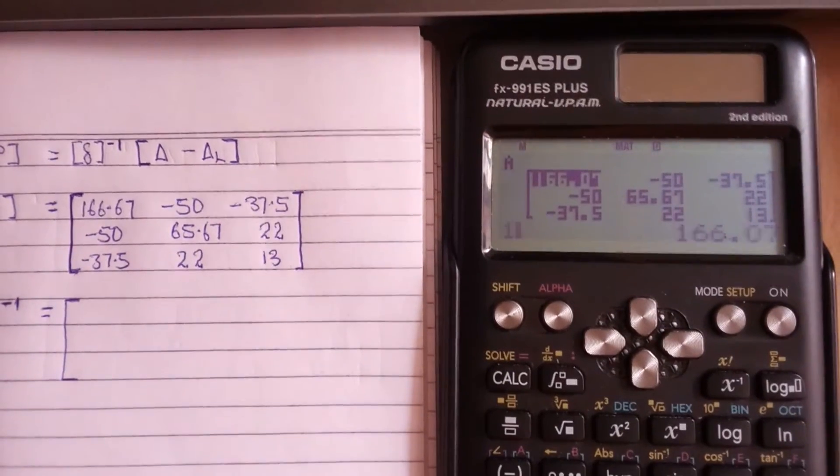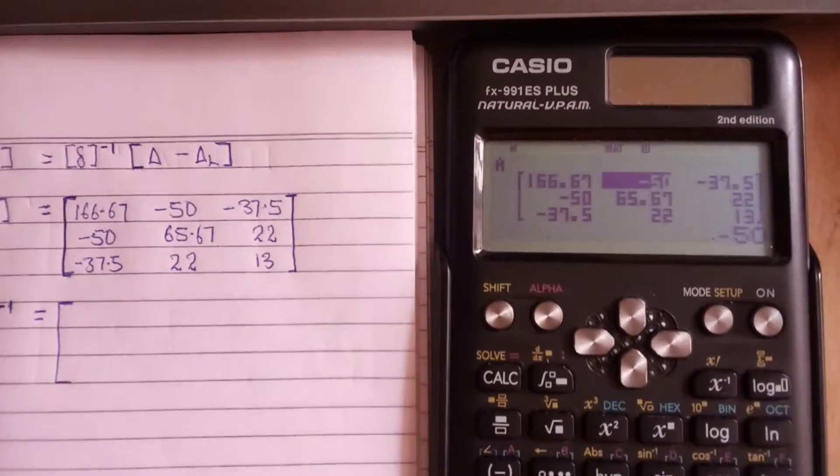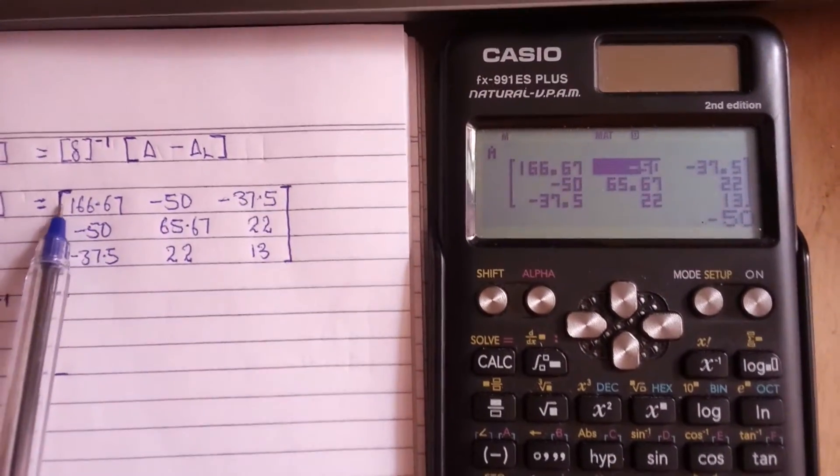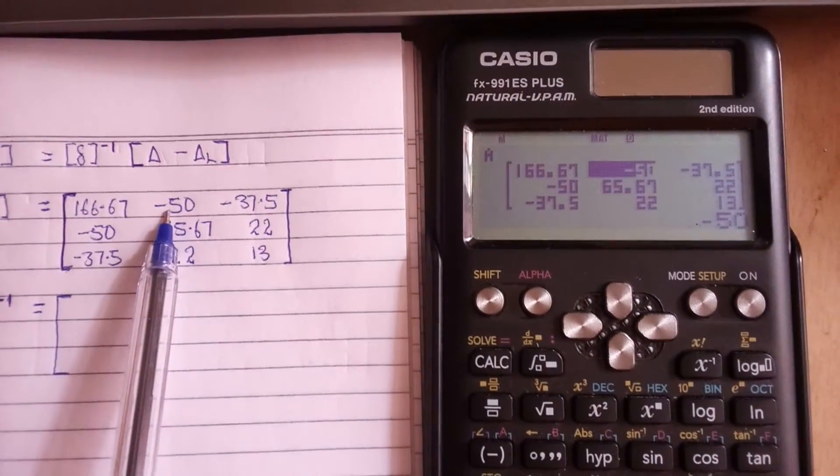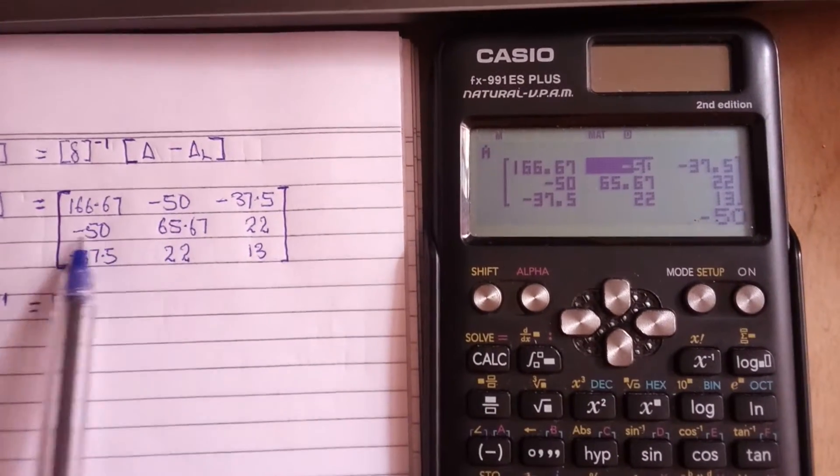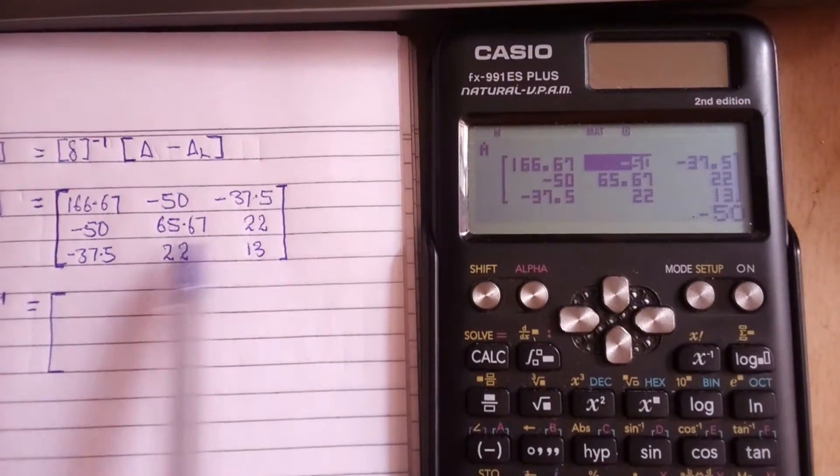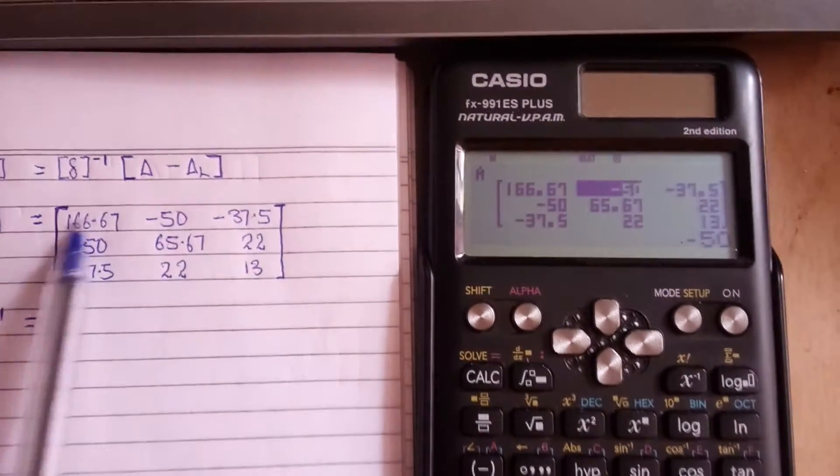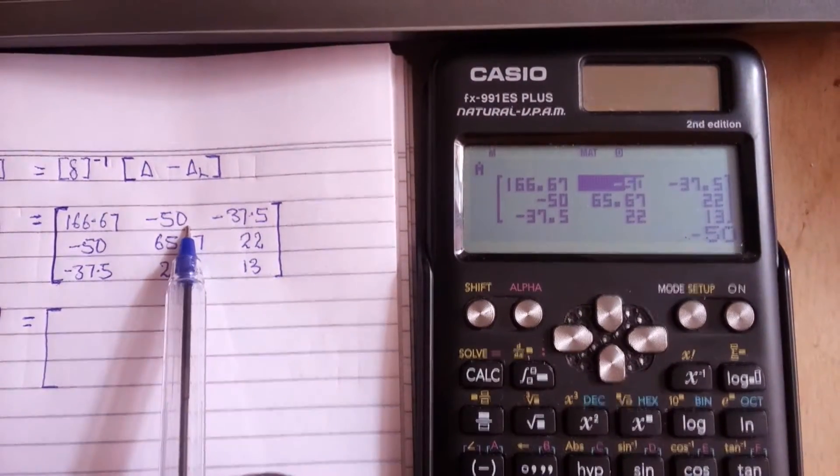What I will do is start typing this: 166.67. Once you type it, you press equal to and your cursor will be moving from row 1 column 1 to column 2 row 1, column 3 row 1, then it enters column 1 row 2, and it moves like that till the last one.